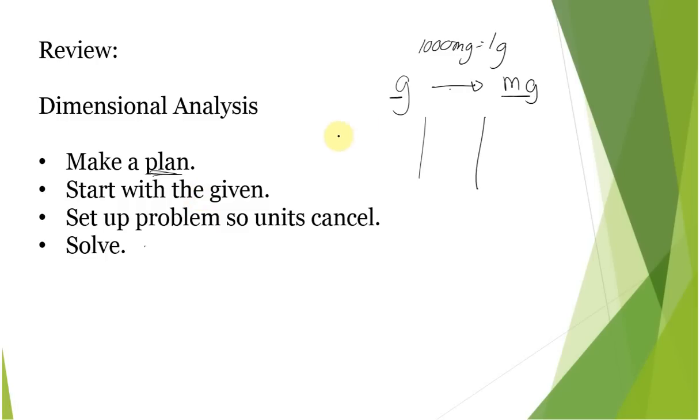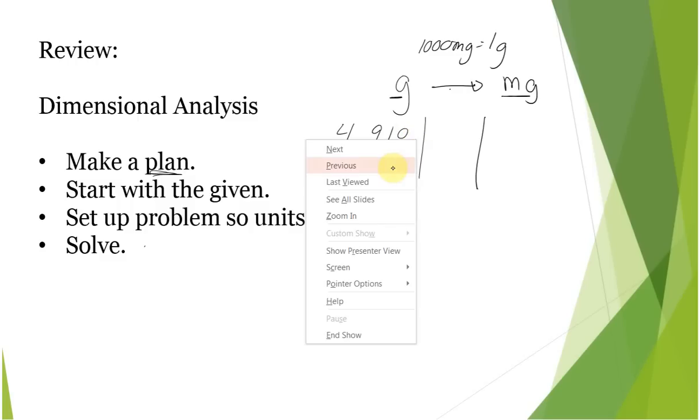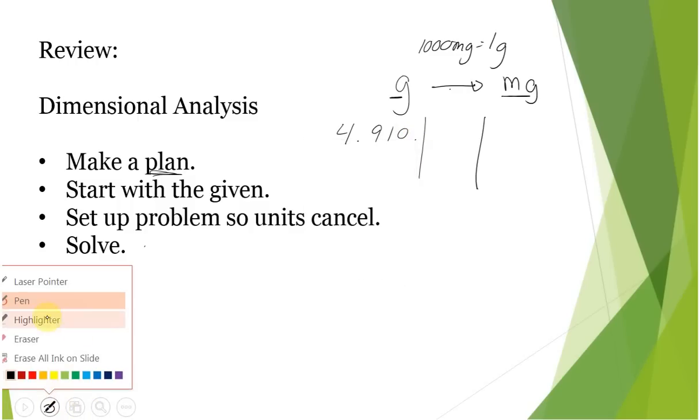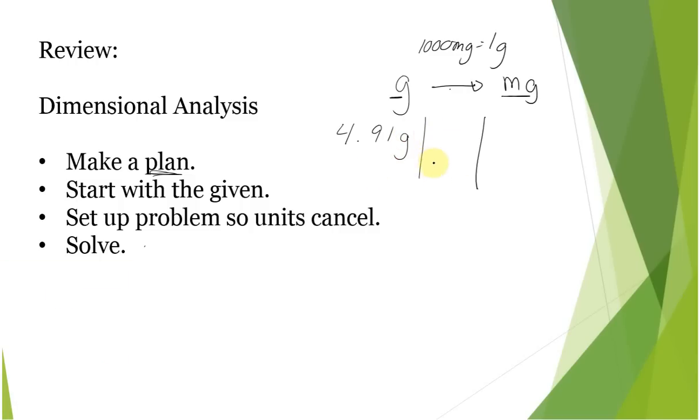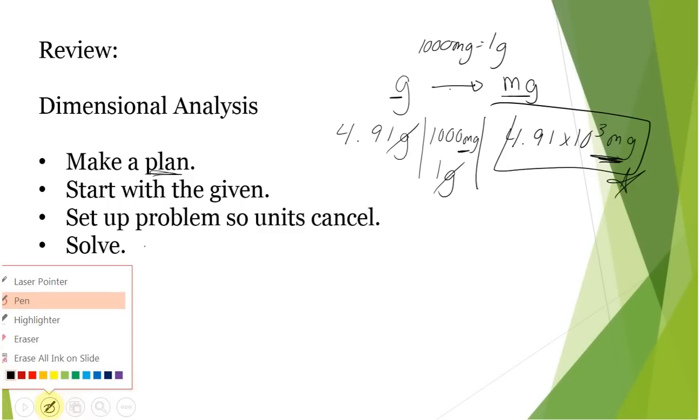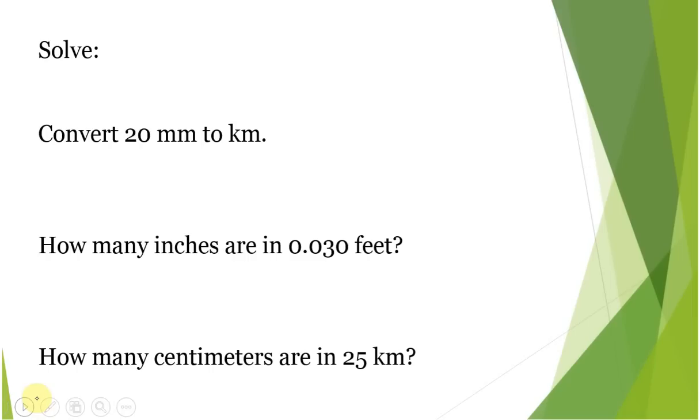We are going to start with what is given. So maybe your paper clip was 4.91 grams. We know every time we have one gram setting up our unit so it cancels, we get a thousand milligrams. Grams cancels, leaves us with units of milligrams. We get 4.91 times 10 to the third milligrams. Make sure you include this unit or you will get points off. Make sure you have the right number of sig figs or you will get points off. It is imperative that you guys have that information correctly.